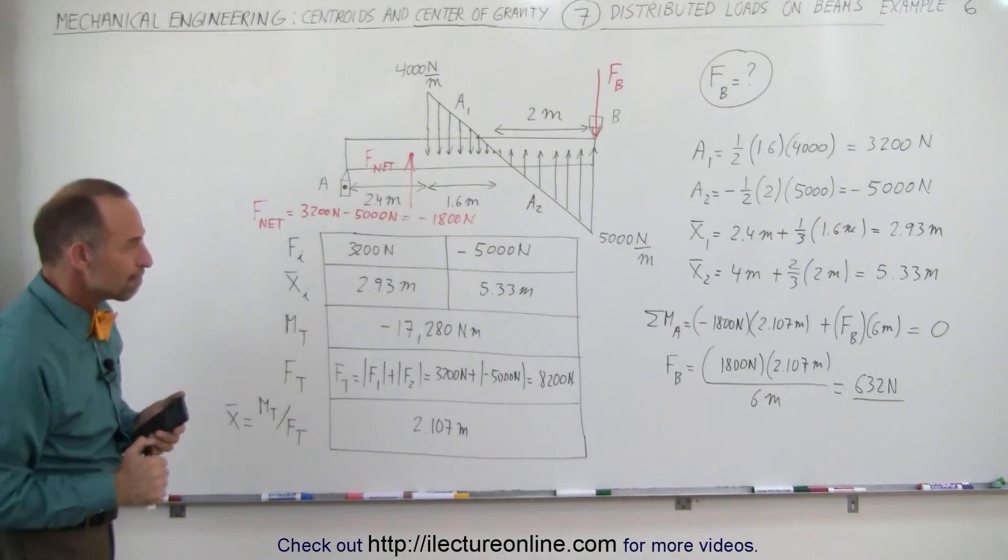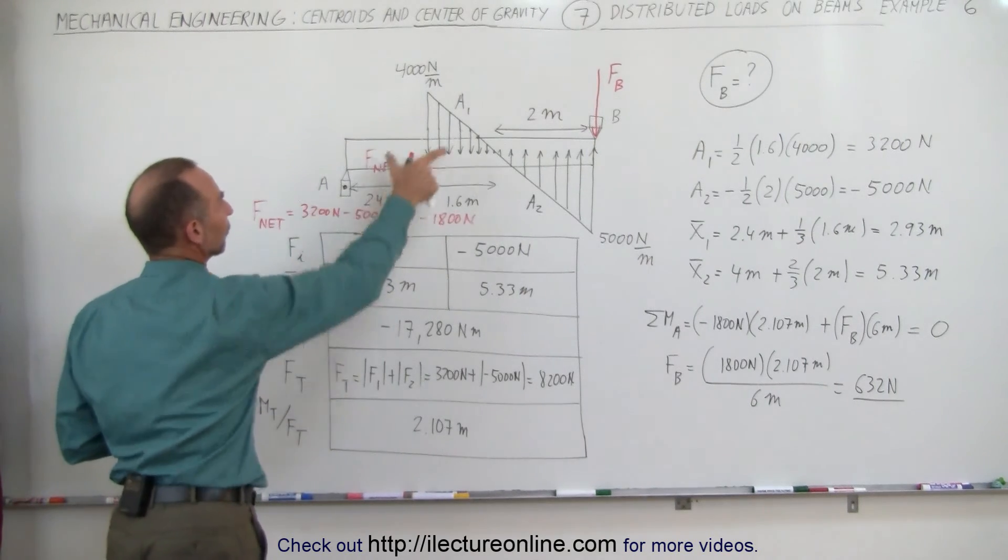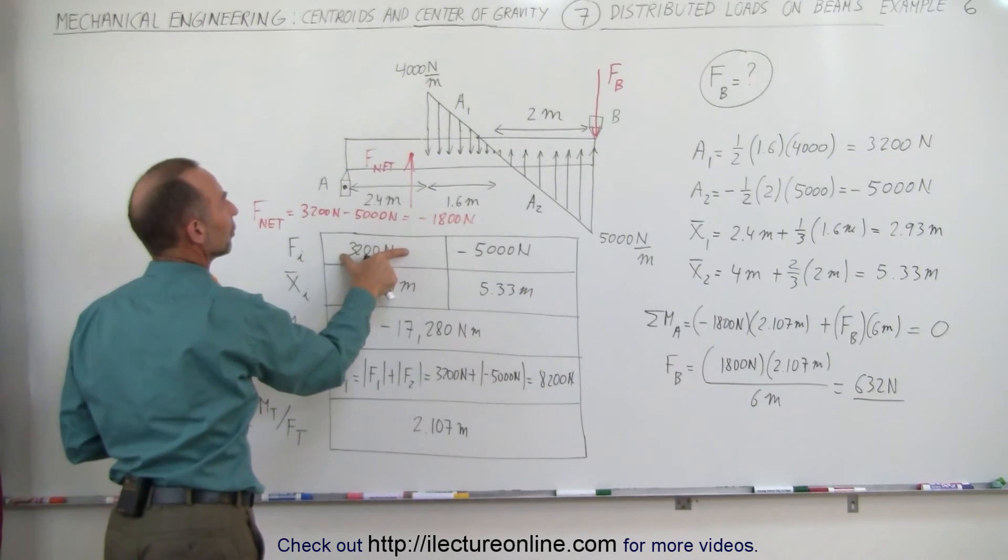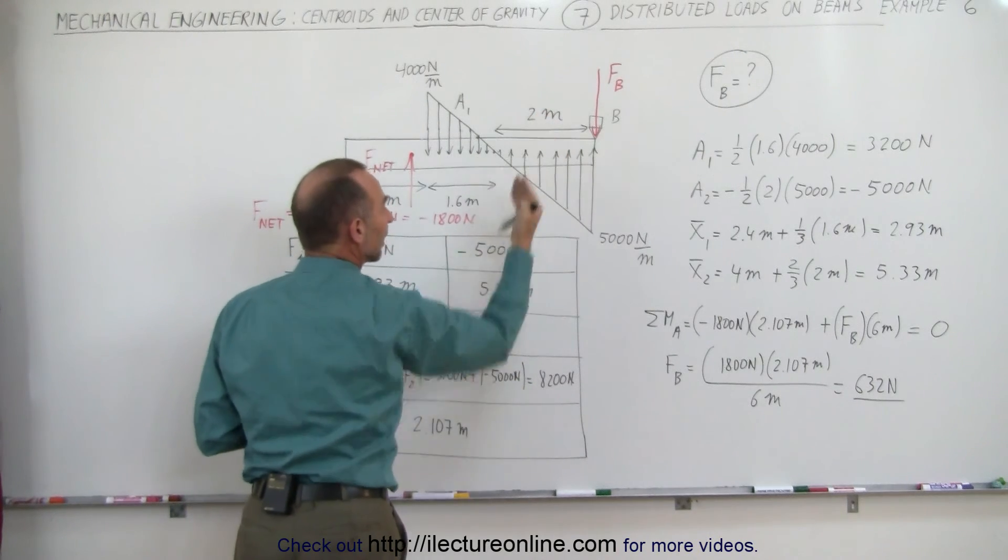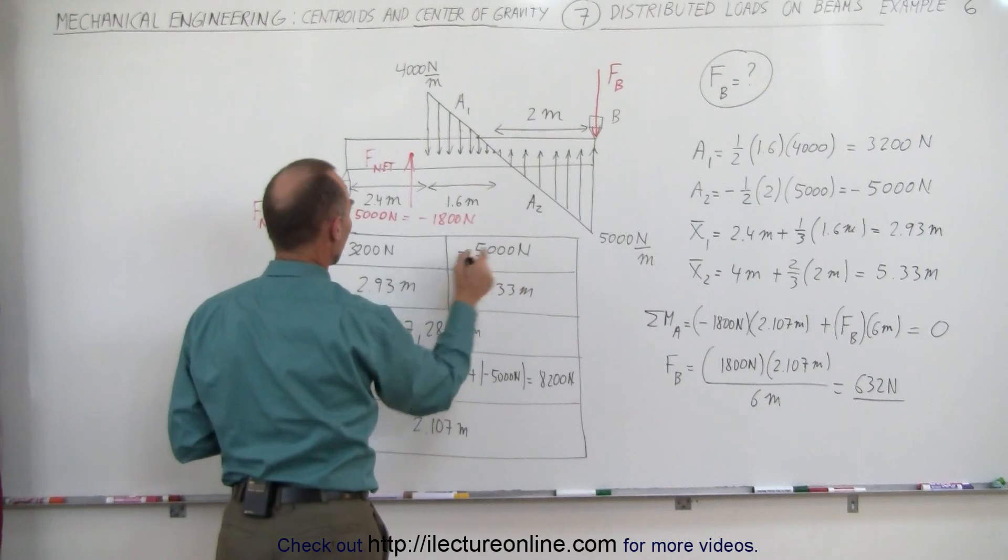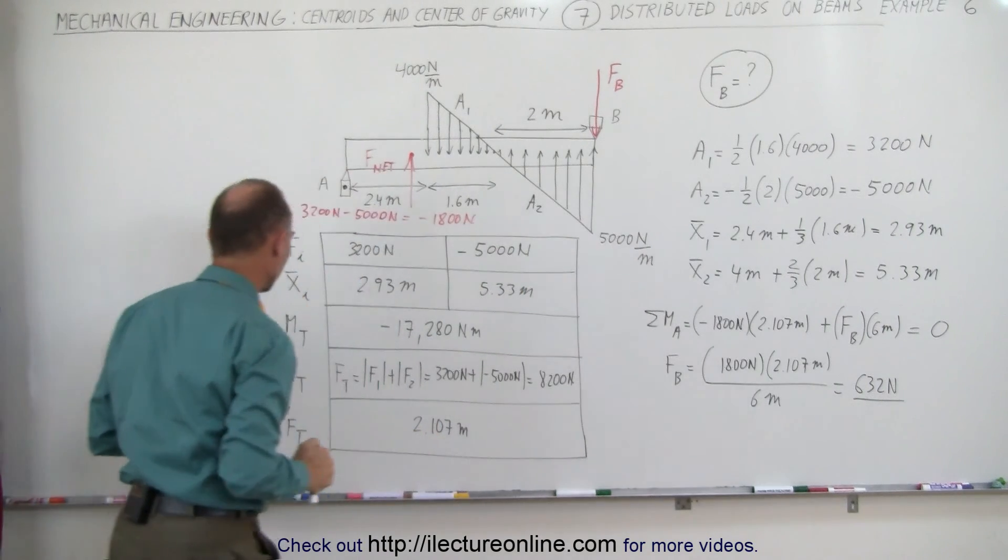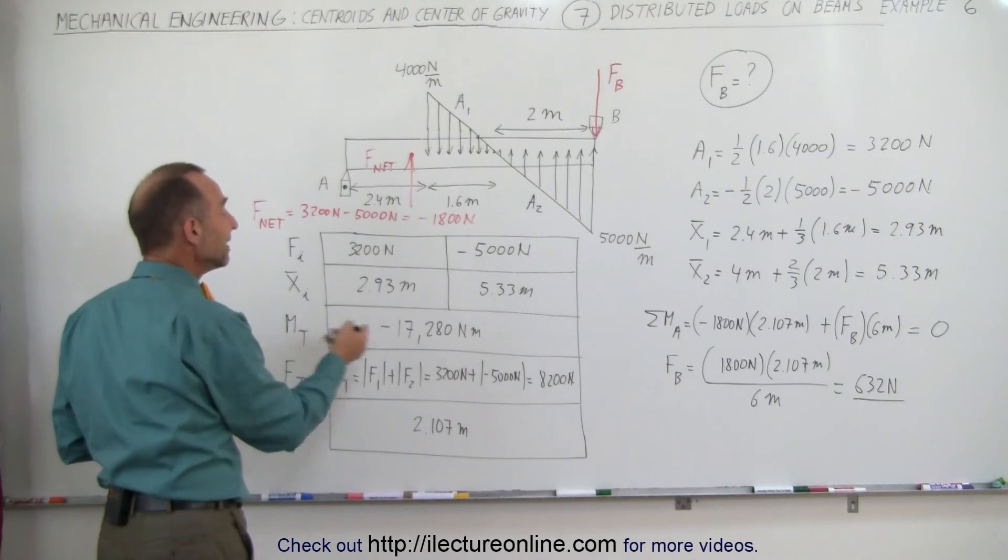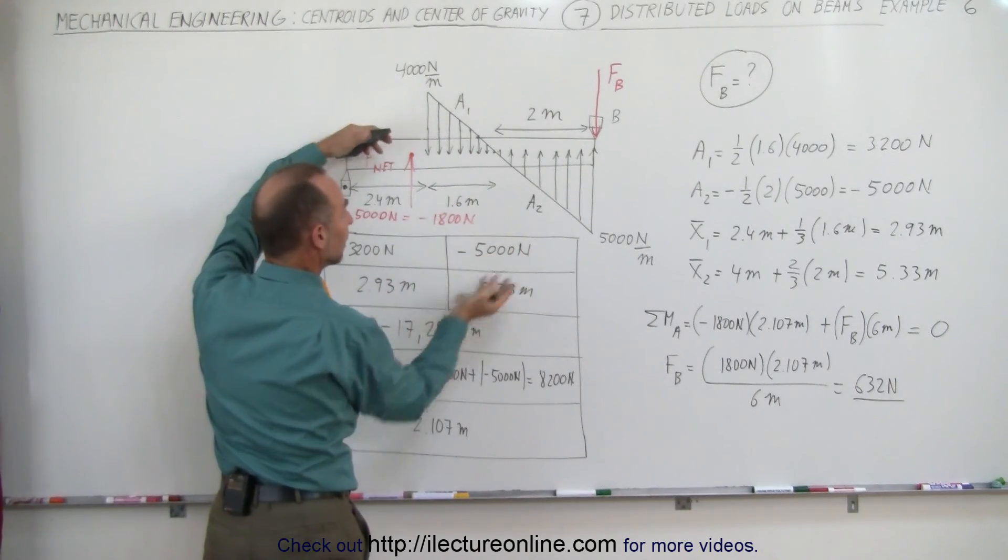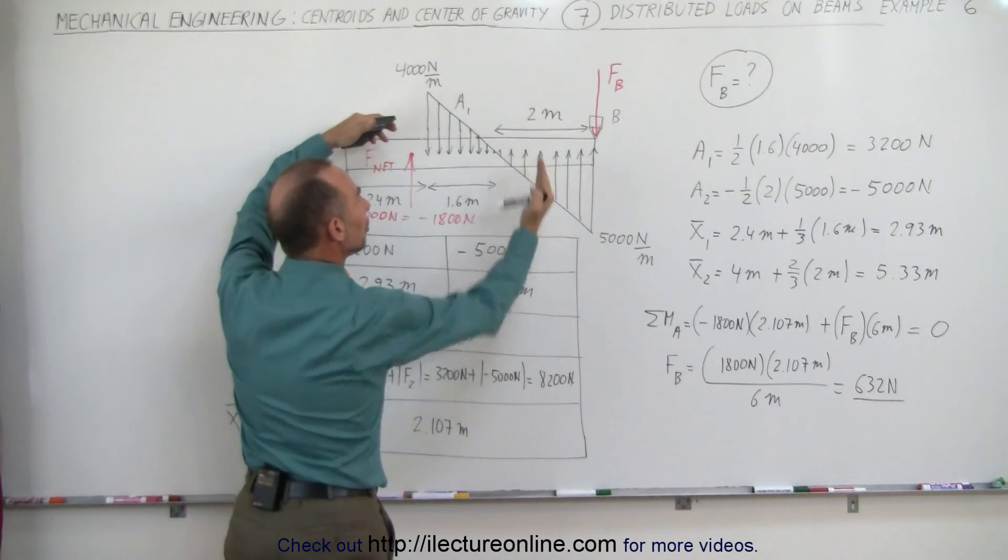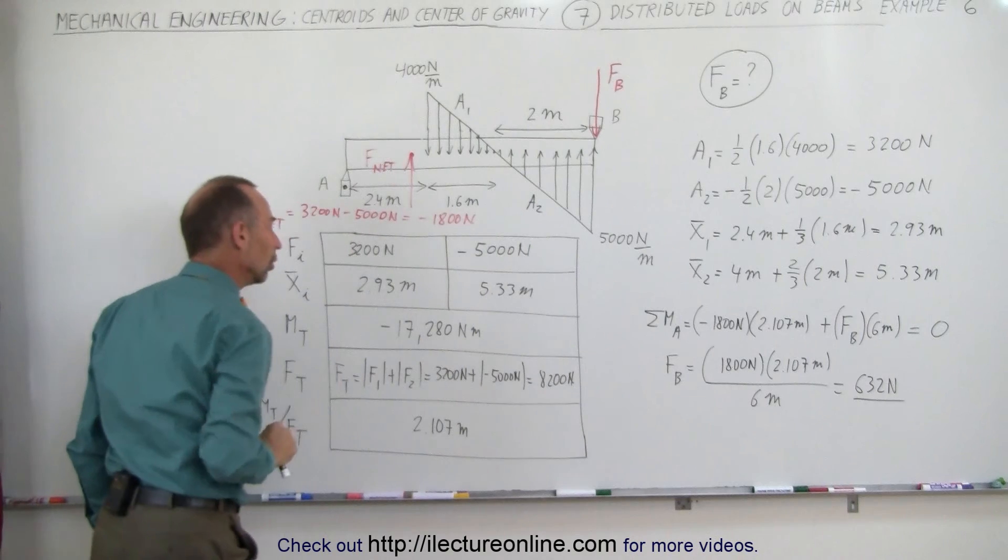A little bit tricky, so let's review it. Total force of the first segment, a positive 3,200 newtons. Total force of the negative segment, the segment pushing back up against the beam from the bottom, is a negative 5,000 newtons. The centroids at 2.93 meters and 5.33 meters. The total moment is indeed negative. If you think about it as caused primarily by the load pushing down from the bottom of the beam, it would cause the beam to tip this way.